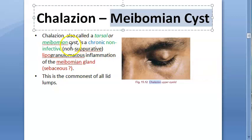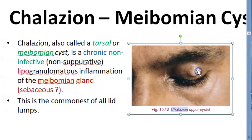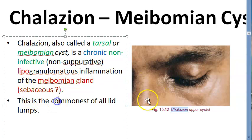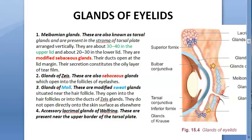Chalazion is a chronic condition that slowly grows. It is non-suppurative and involves lipogranulomatous inflammation — not pus, but lipogranulomatous inflammation inside. It is the commonest of all lid lumps, making it very important clinically.